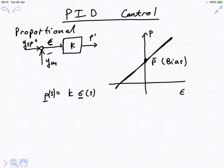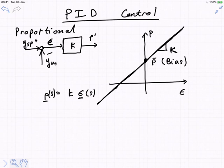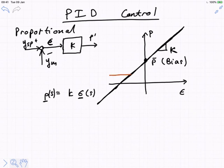Proportional control works like this: if the error is nonzero, the output responds proportionally, and the slope of that line is the proportionality constant. The ideal version of this controller — which we can analyze with linear methods — allows the output to go up to infinity and down to minus infinity. But in the real world, realistic versions have bounds; you can't open or close a control valve beyond its physical limits.